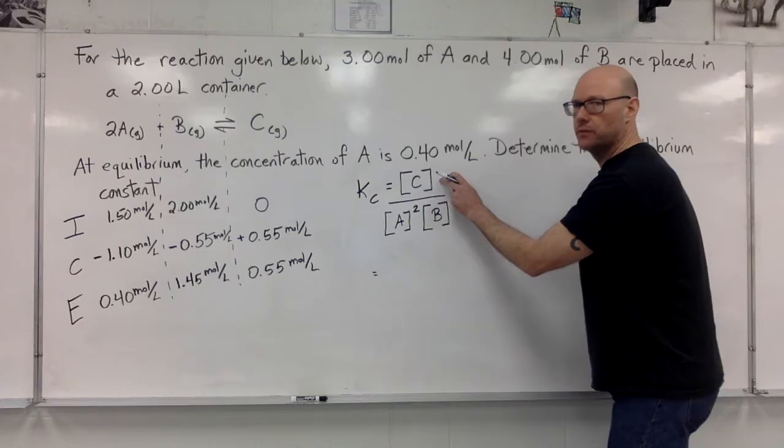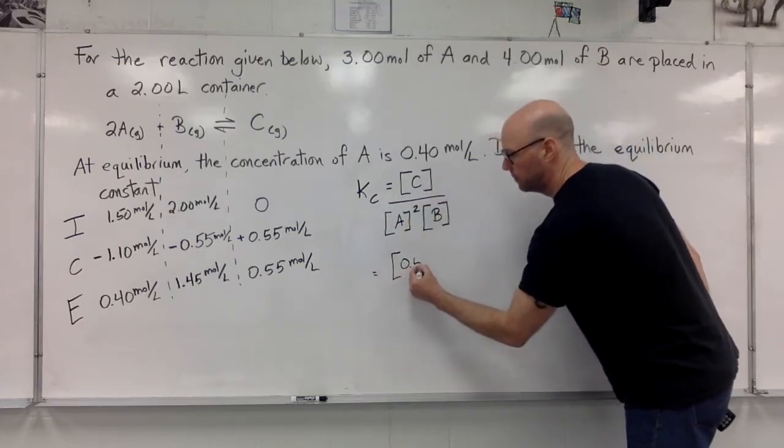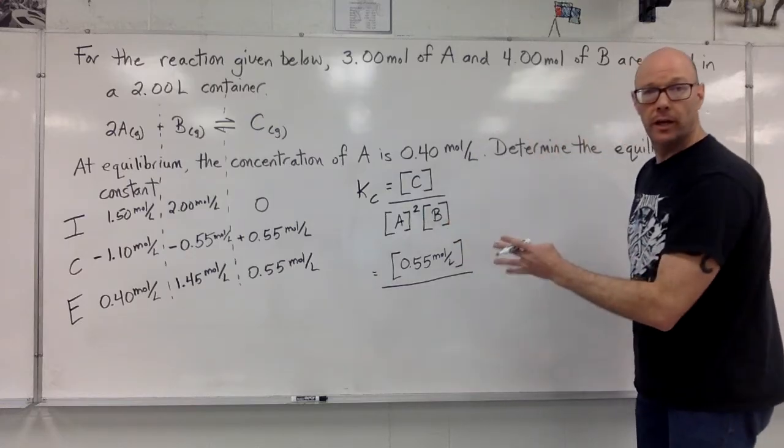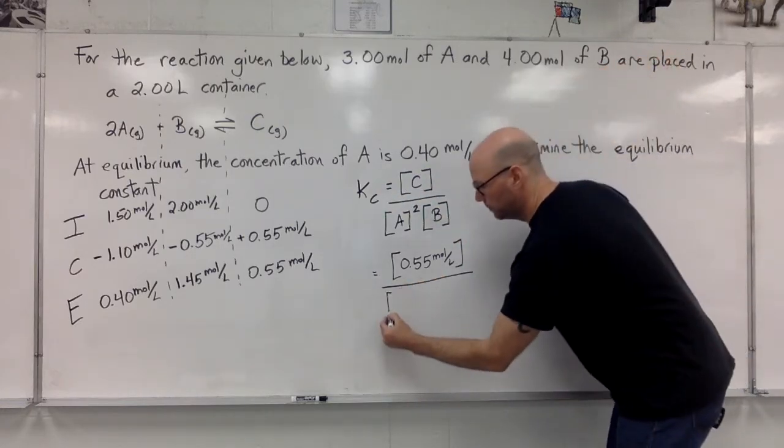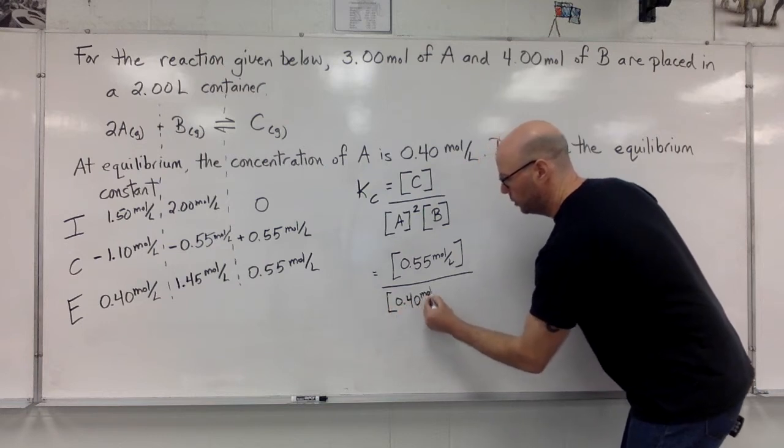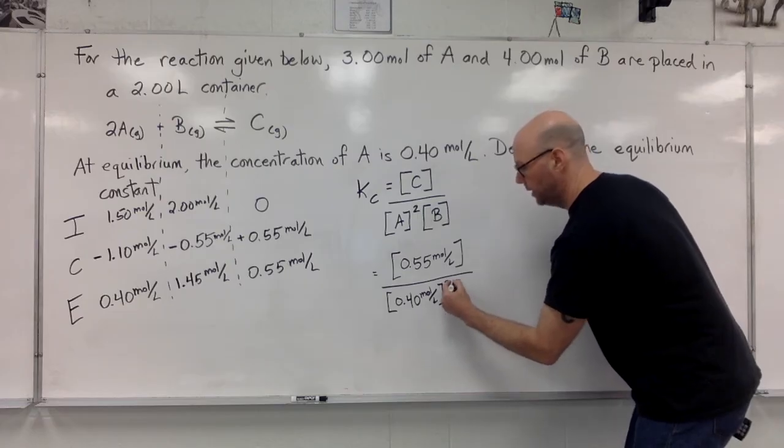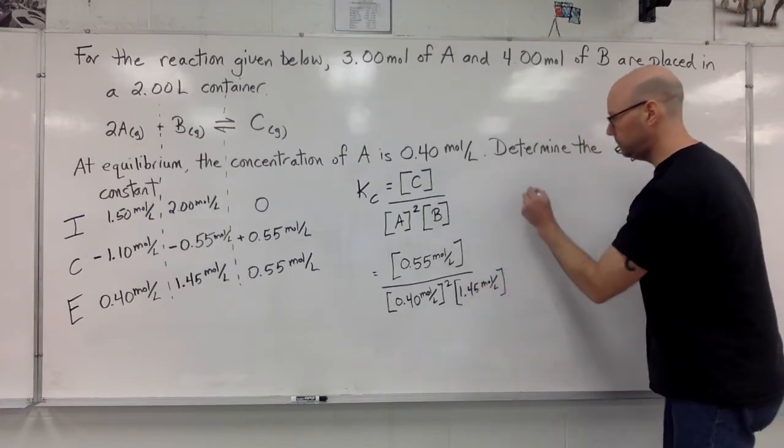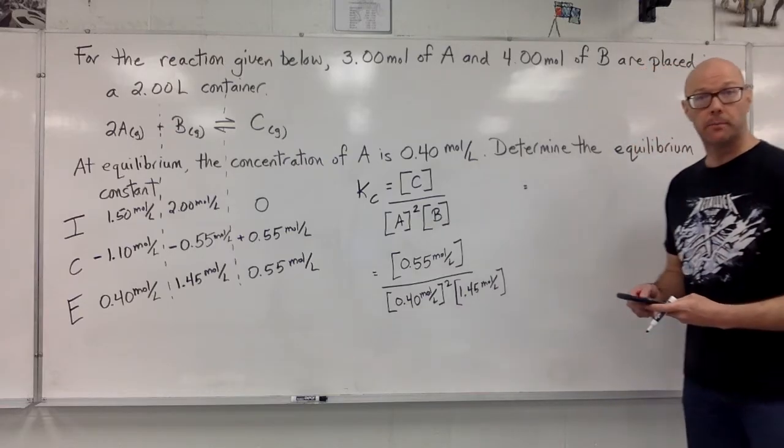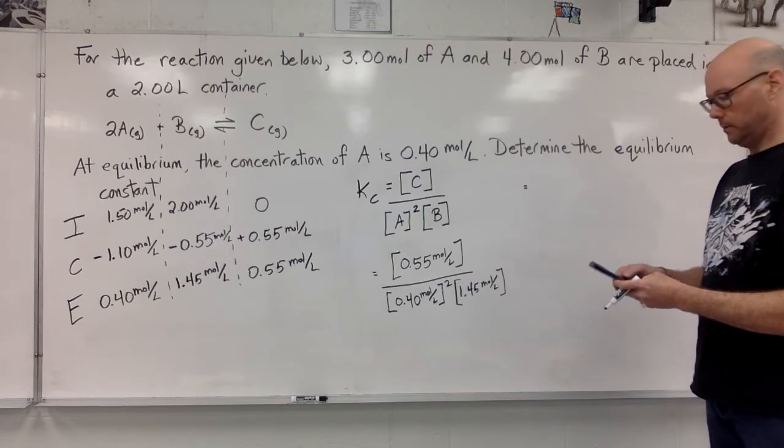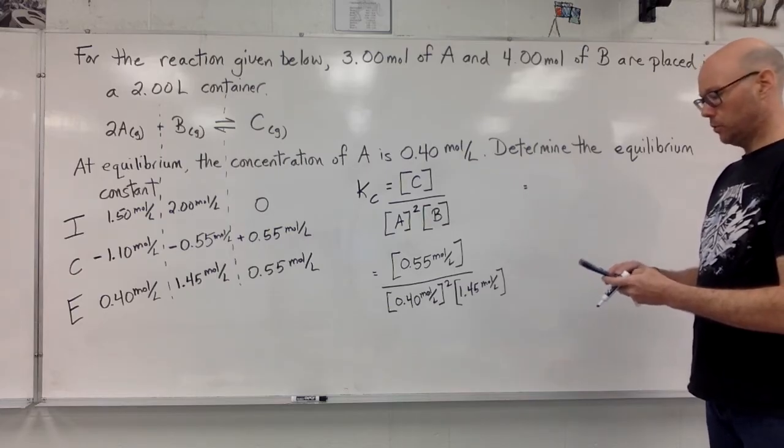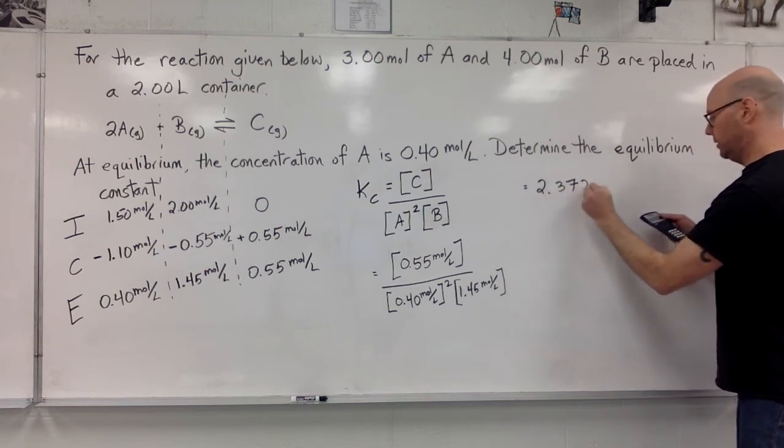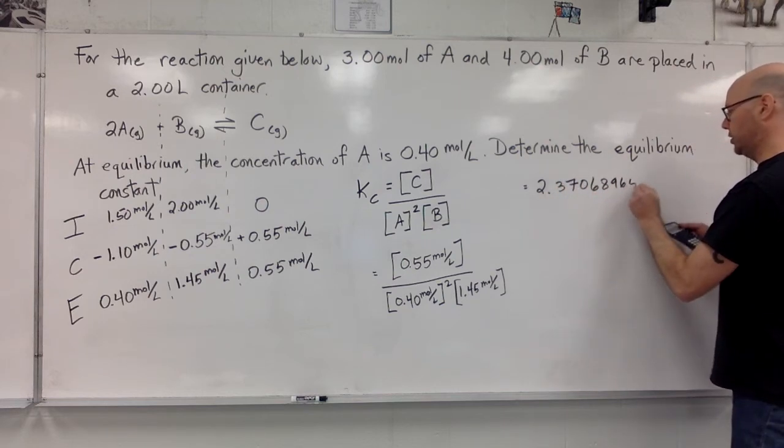This is the concentration of chemical C with 0.55 over concentration of chemical A over there was 0.40. 0.40 moles per liter squared. And the concentration of chemical B, 1.45 moles per liter. Now we're going to calculate away. I'm taking my time. There's lots of buttons to push. 0.40 squared times 1.45. We end up with 2.370689655.